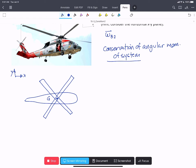If we look at this in the xy here, we're going to have some angular velocity of the rotor, we'll assume it's positive, and some angular velocity of the body.